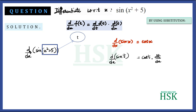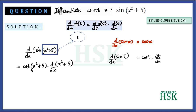We can write d/dx of sin(x² + 5) as equal to cos(x² + 5) multiplied by d/dx of (x² + 5), because t was equal to x² + 5.